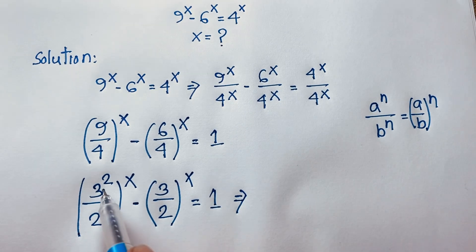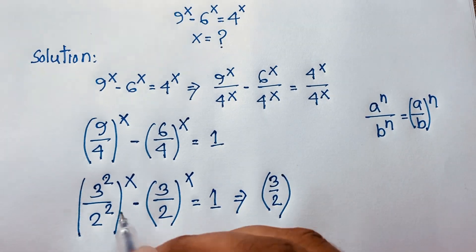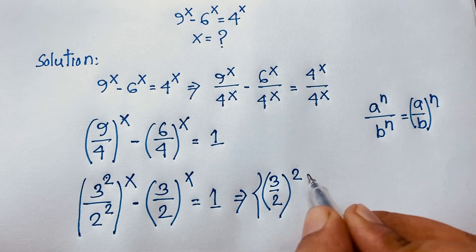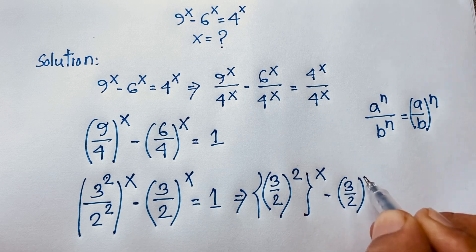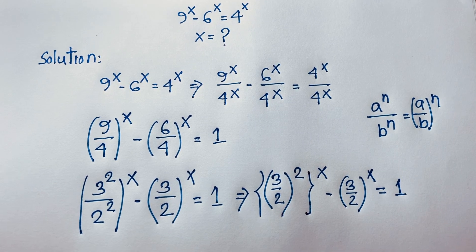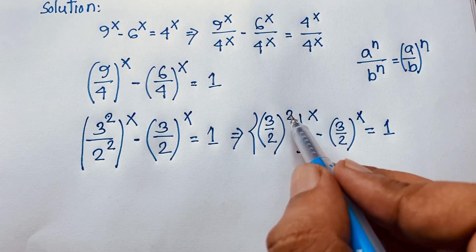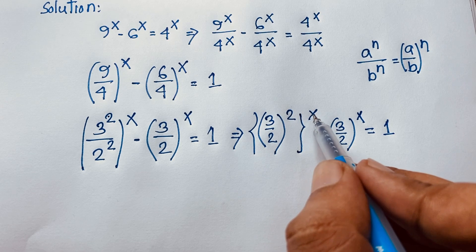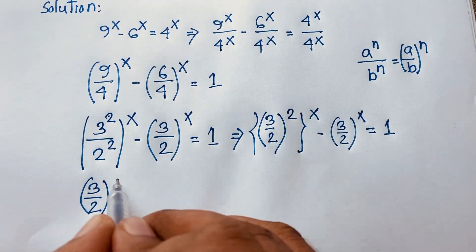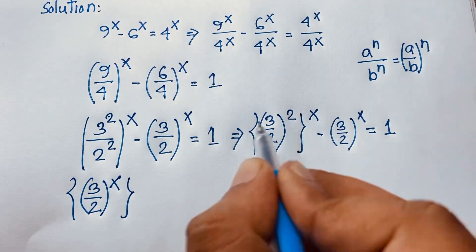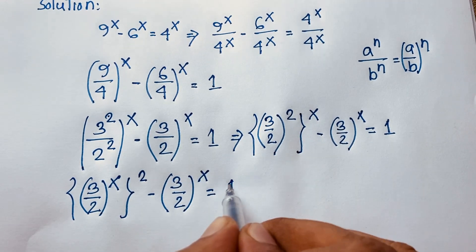Applying the power rule again, since the base terms share the same structure, I move the exponent inside the bracket. This gives us (3/2) to the power 2x, which equals (3/2)^x whole to the power 2, minus (3/2) to the power x, equals 1.